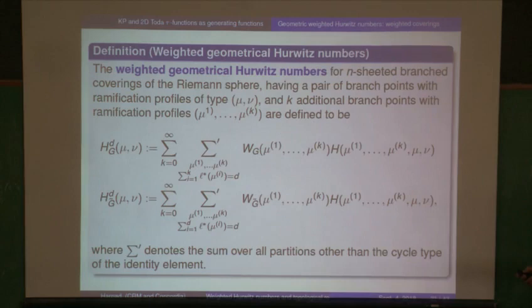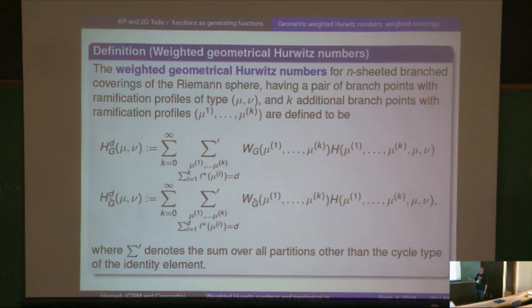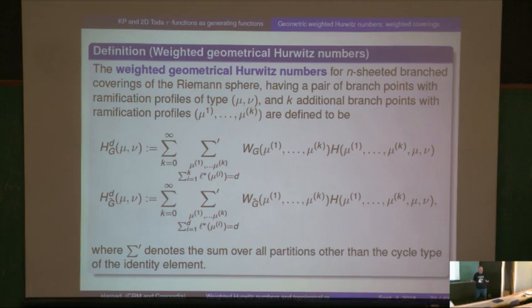So: go from the basis of Schur functions to the basis of power sum symmetric functions using the Frobenius character formula, which brings in the characters, and do the calculation — and you get exactly the weighted Hurwitz numbers as I've defined them before. The weights were these monomial symmetric functions, and we add up over every possible configuration with the same defect, meaning fixed genus. Fixing D is the same through the Riemann-Hurwitz formula as fixing the genus of the covering.